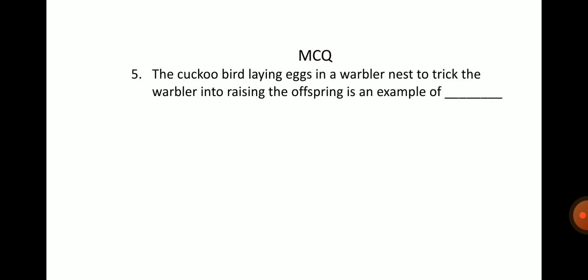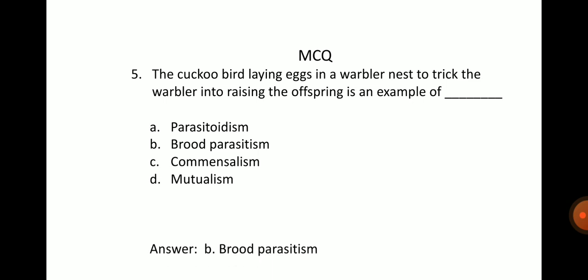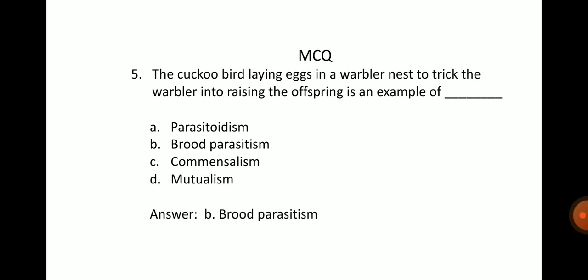Next question: the cuckoo bird laying eggs in a warbler nest to trick the warbler into raising the offspring is an example of? Options: A. Parasitoidism, B. Brood parasitism, C. Commensalism, D. Mutualism. The answer is option B, brood parasitism.